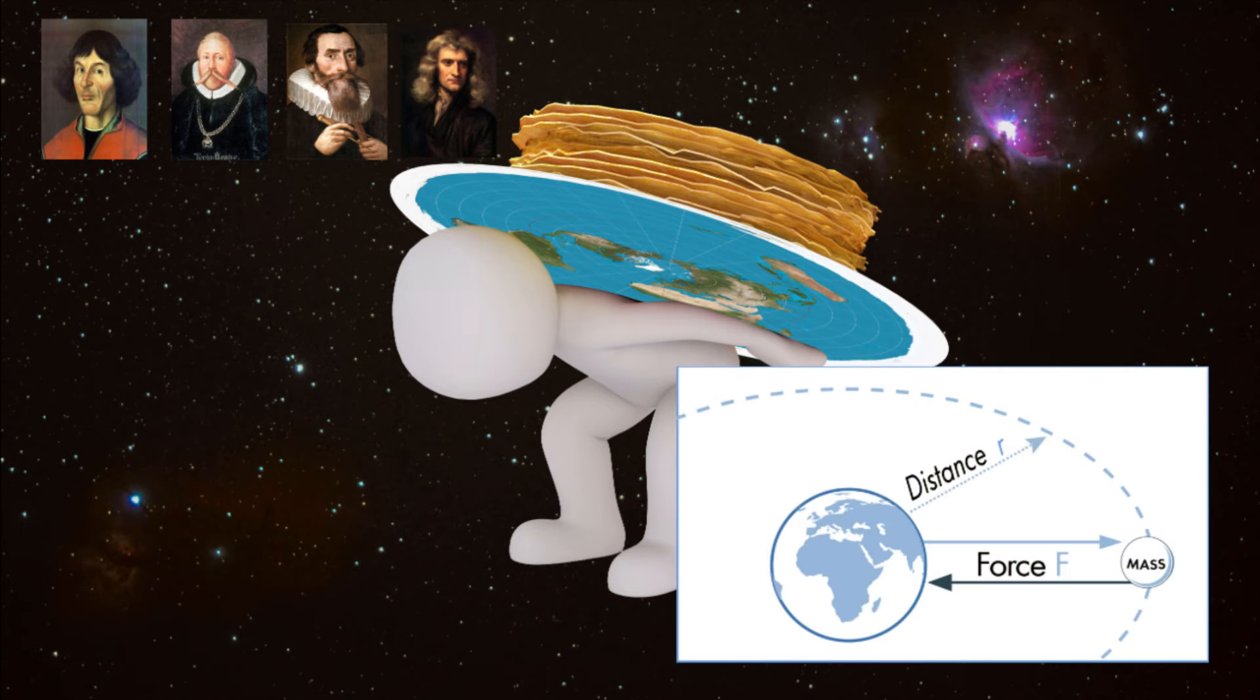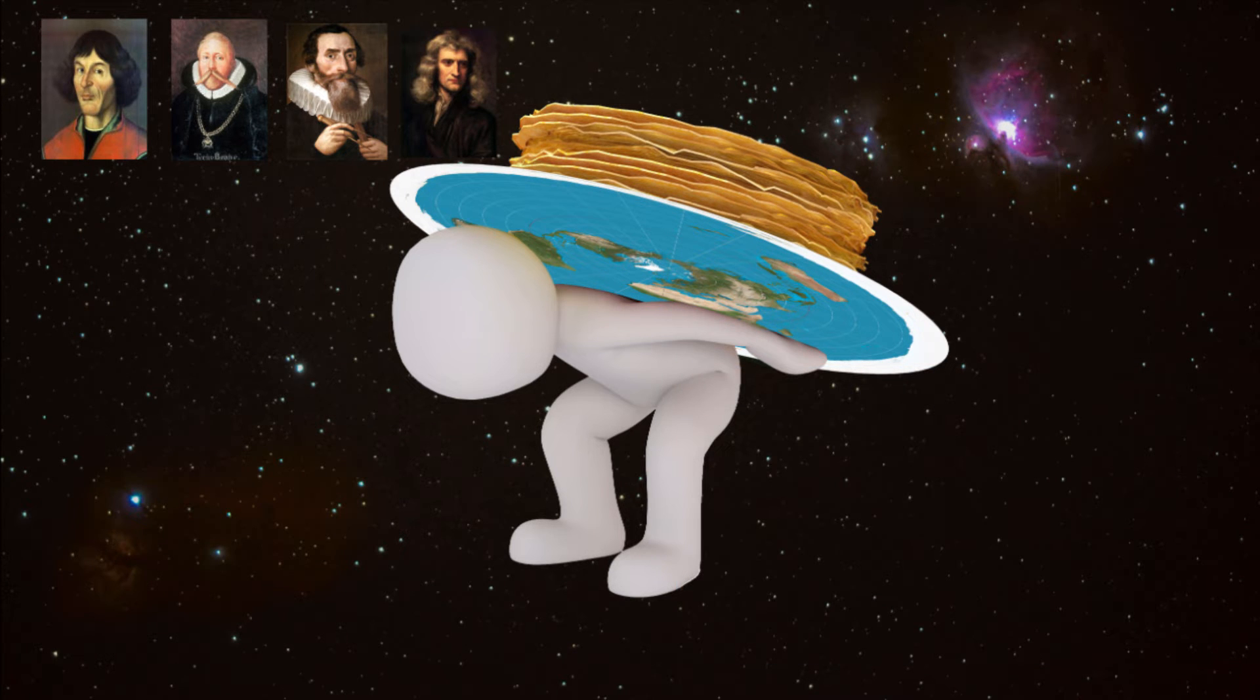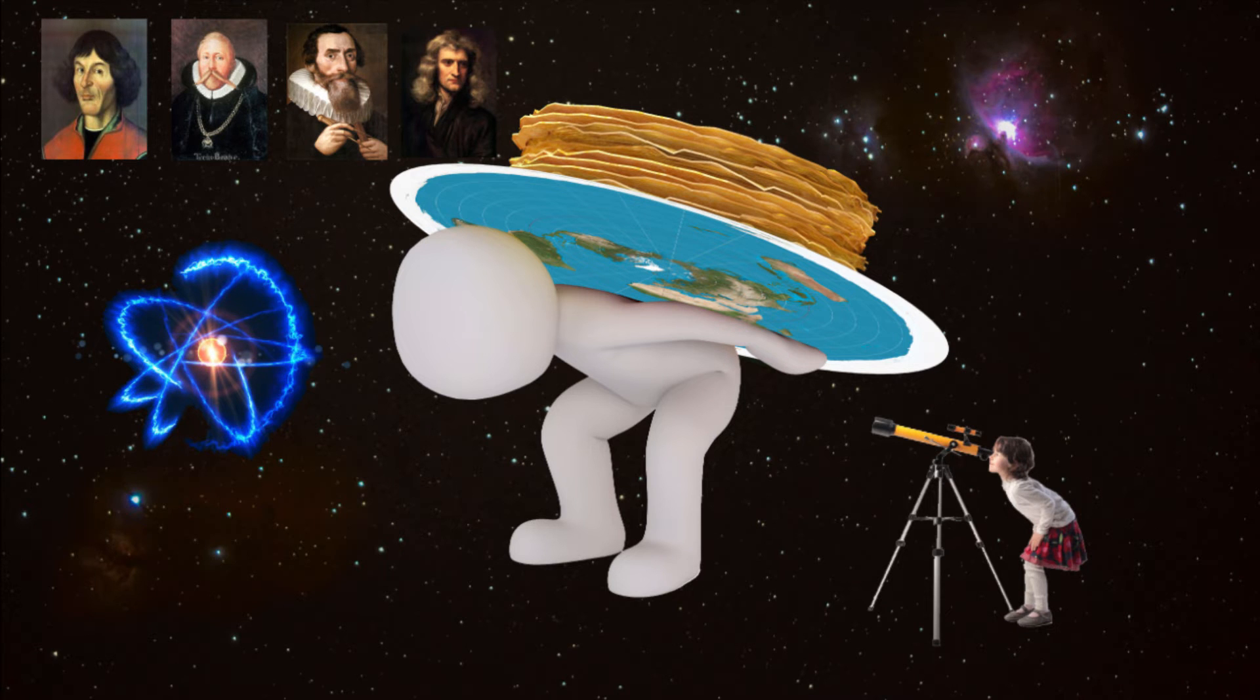The 'why' of orbital dynamics wasn't answered until 1687 by Sir Isaac Newton and his laws of universal gravitation. Newton theorized that objects attracted each other based on their distance and mass.